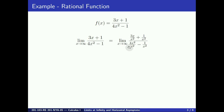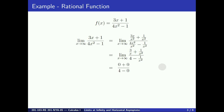After simplifying this gives 3 over x plus 1 over x squared, divided by 4 minus 1 over x squared. We have divided each term by x squared and then simplified. As x approaches infinity, this limit approaches 0 plus 0 over 4 plus 0, which is 0 over 4, which is 0.